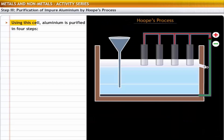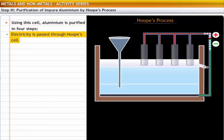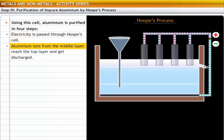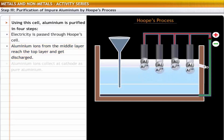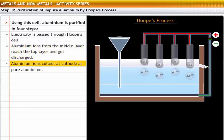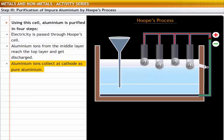Using this cell, aluminium is purified in four steps. Electricity is passed through Hoop's cell. Aluminium ions from the middle layer reach the top layer and get discharged. Aluminium ions collect at the cathode as pure aluminium.